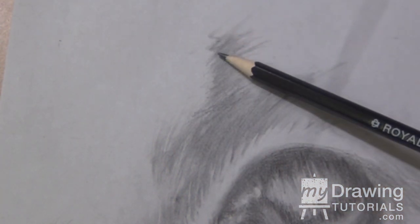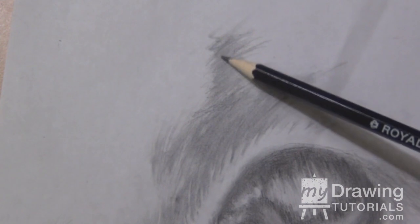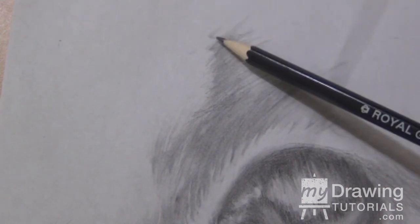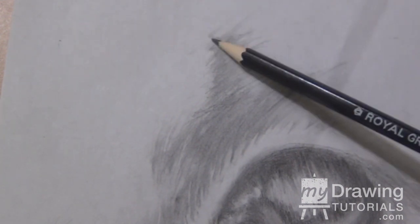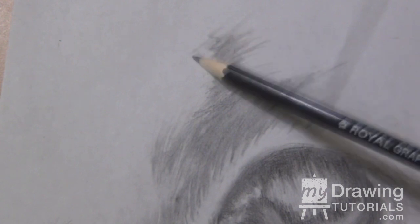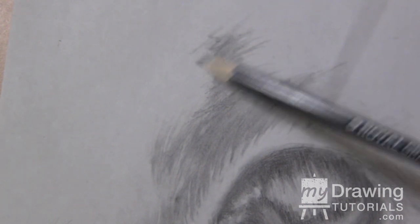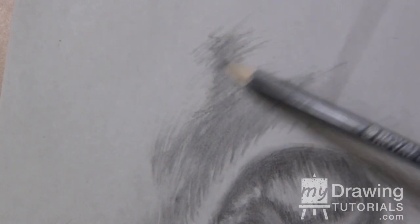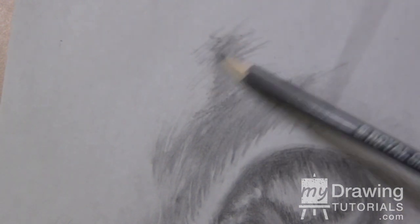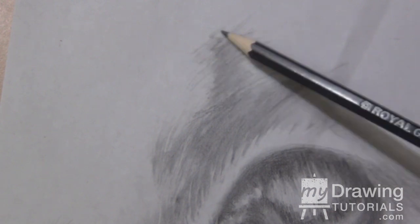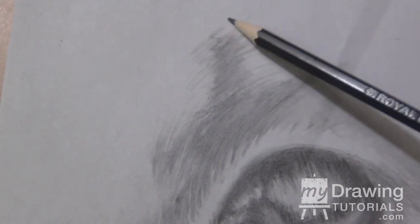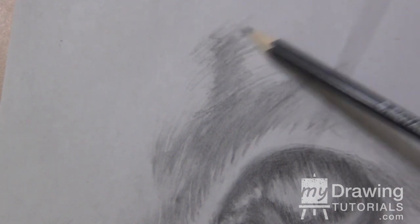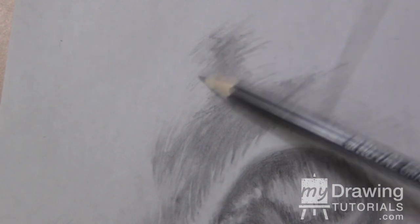The dark tone is a little bit too dark for the kneaded eraser to cut into, so I'm going to take the HB pencil and I'm going to create a lighter gray tone next to it. This is going to help me create that layer of gray fur that stands between the dark and the white.